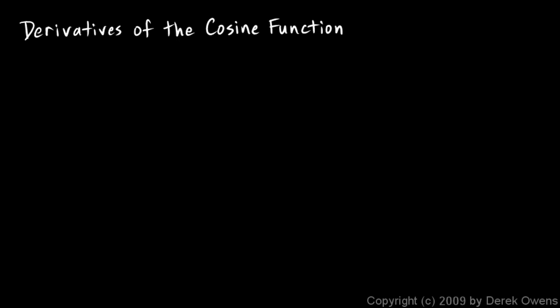Now we will differentiate the cosine function. Earlier we learned that the derivative of the sine function is the cosine function, and that fact will make differentiating the cosine function pretty easy. So here's our problem: f of x is equal to cosine x, and we want to find the derivative of that function.